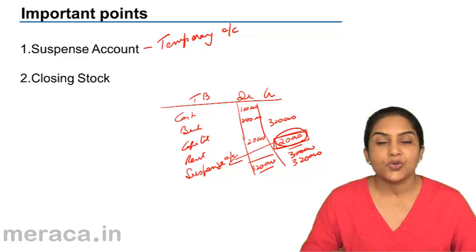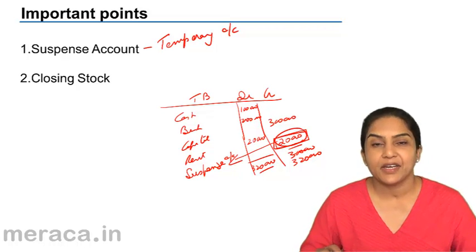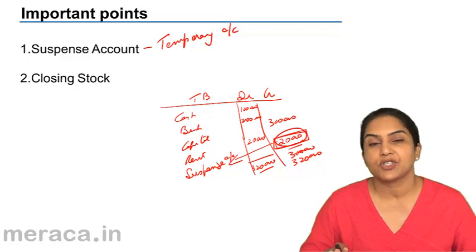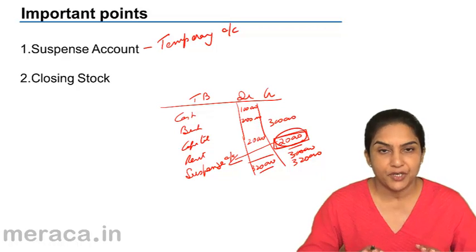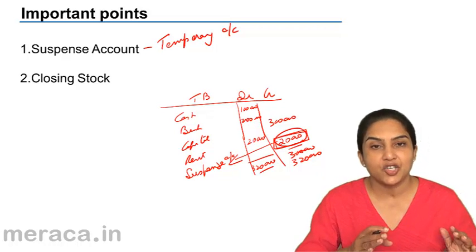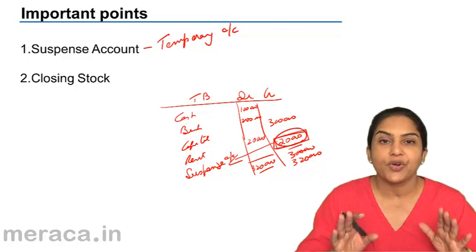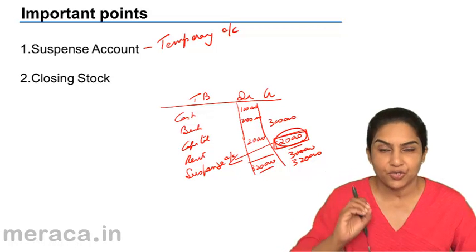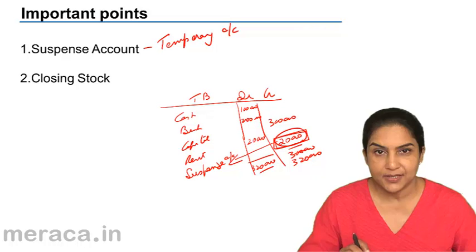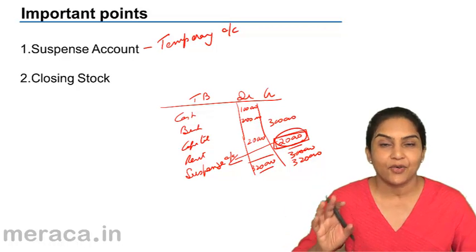What is closing stock? We do not have an account called closing stock — the ledger does not have a closing stock account. We have purchases; goods are purchased and remain in our stock. Goods which are purchased but not sold, that is called stock. But we don't have a separate account for it. When we purchase goods, we say purchases account debit to cash. When we sell goods, we say cash account debit to sales, or debtor account debit to sales.